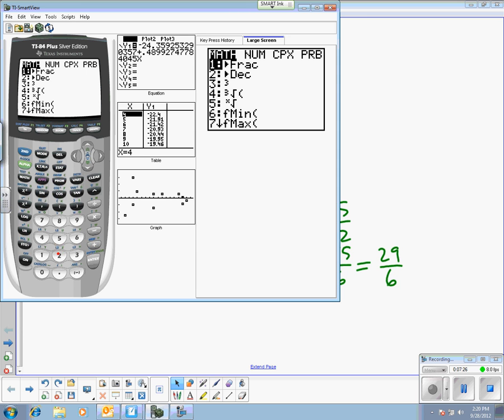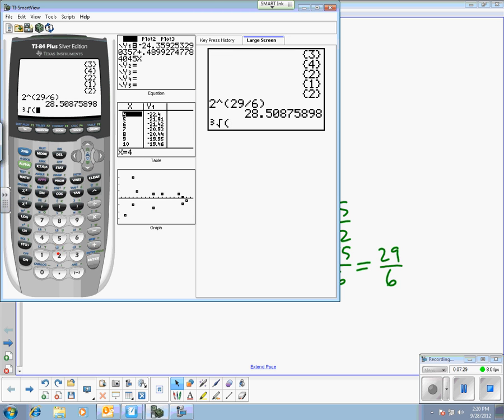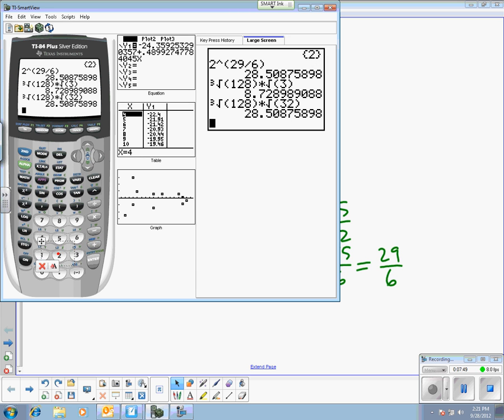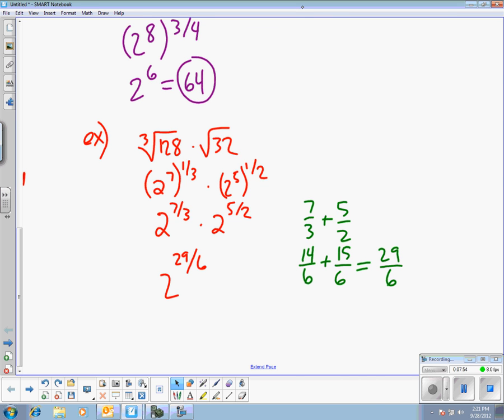Math cube root of 128 times the square root of 32 is 28.5087. All right, so you can confirm that it works with your calculator, but you don't need your calculator to end up with this answer.